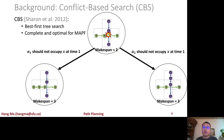Many state-of-the-art optimal and bounded suboptimal MAPF algorithms are based on Conflict-Based Search, or CBS. CBS is a two-level algorithm. It plans paths for single agents on the low level individually and performs a best-first search on a binary tree on the high level to resolve collisions in the computed paths from the low level systematically.